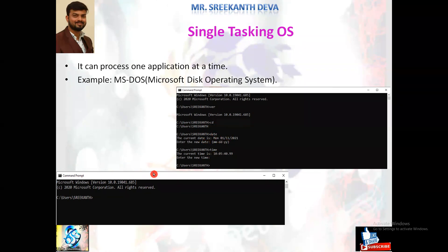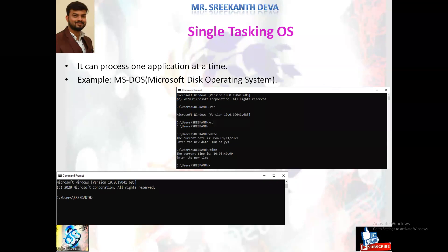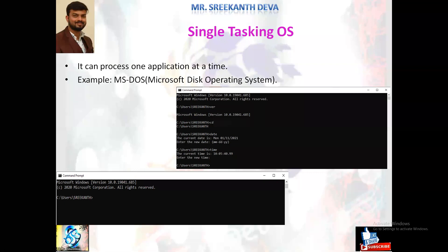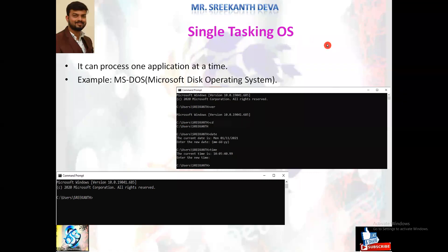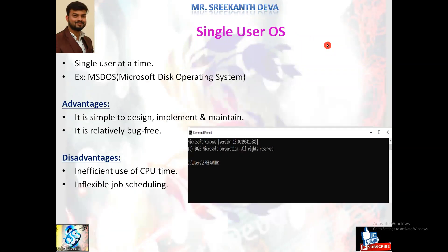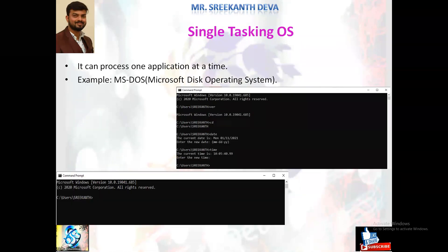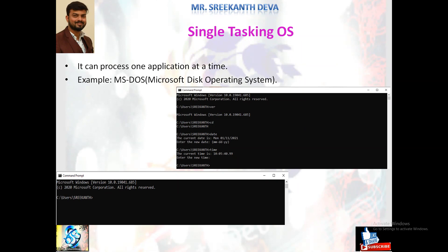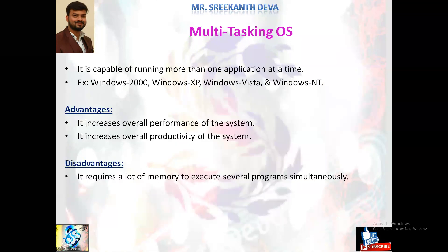Advantages of single tasking OS: it makes the best utilization of resources — all computer resources are dedicated to the one task the user is running. Disadvantages: no sharing of CPU, memory, or disk I/O; parallel execution is not possible. MS-DOS is the best example for both single tasking and single user operating systems. MS-DOS stands for Microsoft Disk Operating System.